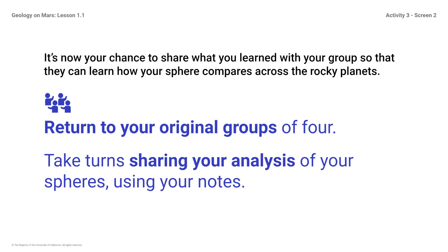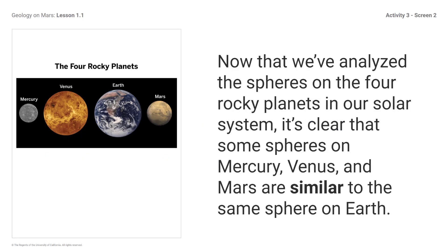Share similarities and differences you notice with others if you can. The atmospheres of Earth and Venus both have carbon dioxide. Earth is the only planet with a biosphere. Now that we've analyzed the spheres on the four rocky planets in our solar system, it's clear that some spheres on Mercury, Venus, and Mars are similar to the same sphere on Earth.